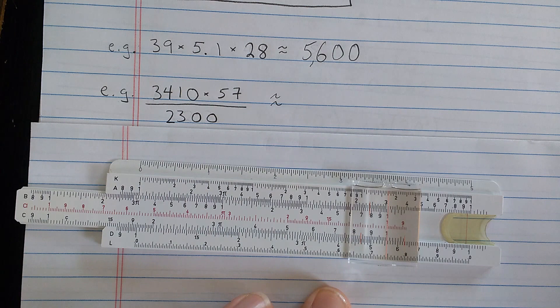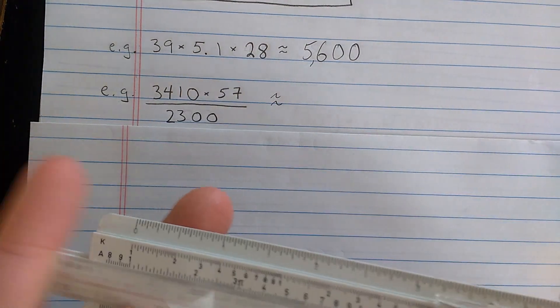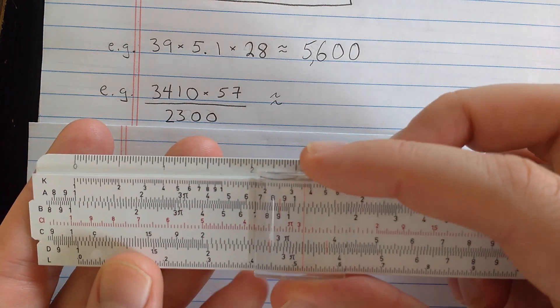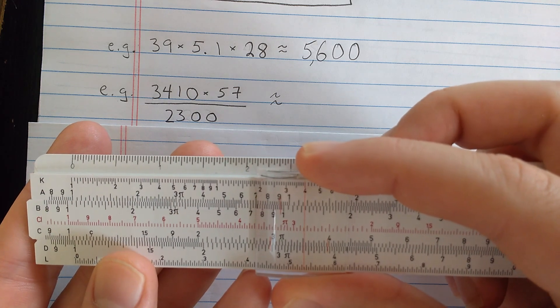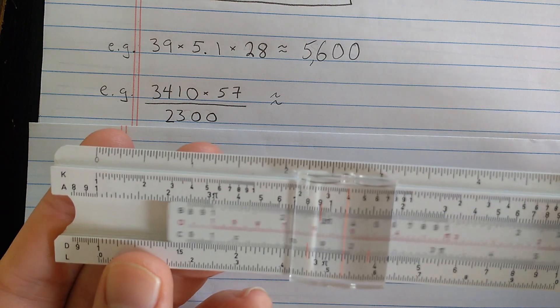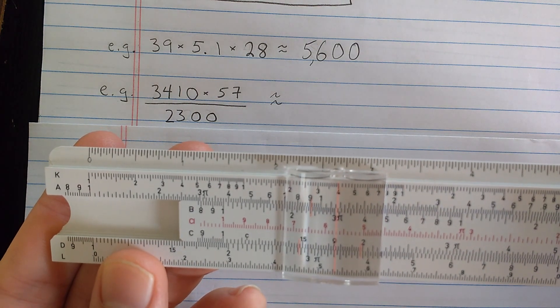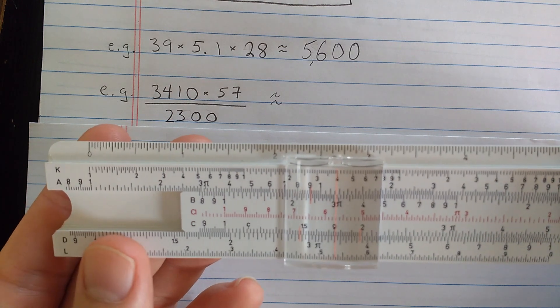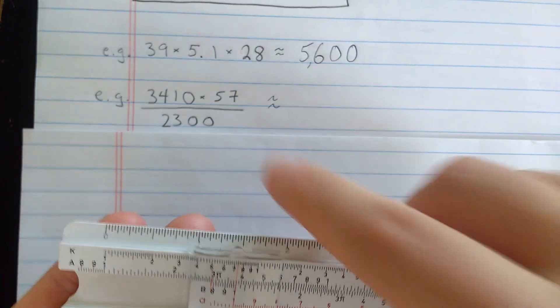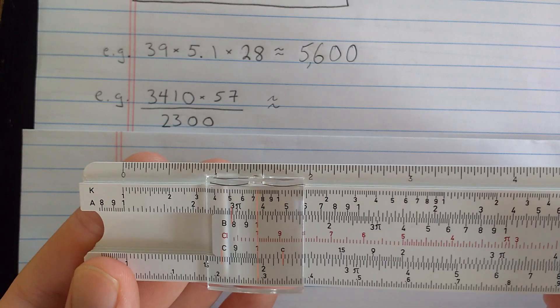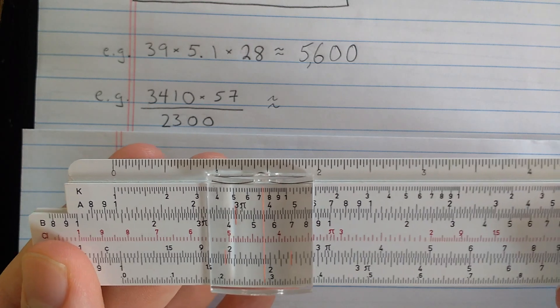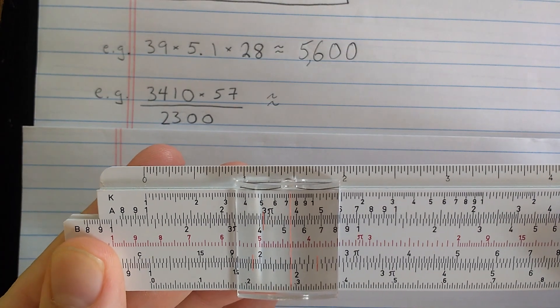Now, I could do this involving one or more divisions. So let's find 3,410. So here's 3.4, and I'll add a hair. And then times 5.7, using the CI scale, about there. Remember, the CI scale reads reversed. So now I need to find the index. One of them should be on scale. There's the intermediate result. Then I'm going to divide by 2,300, or 2.3. Now to divide, remember, I use the C scale. So using the C scale here, there's 2.5, 2.4, 2.3.